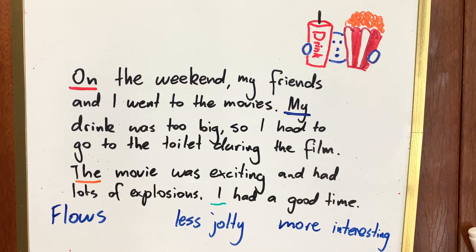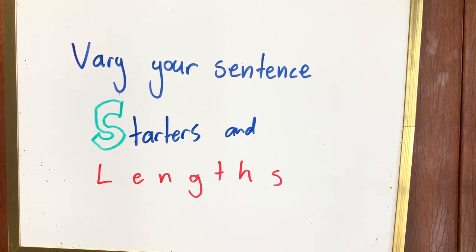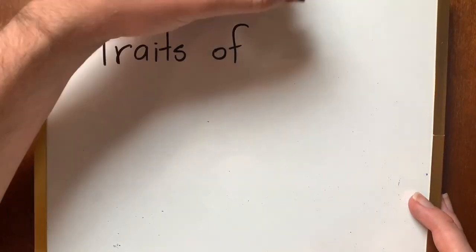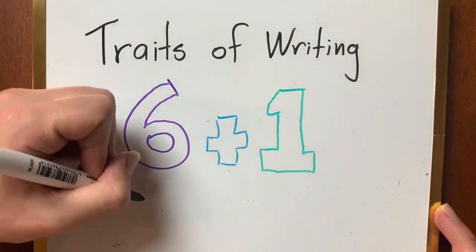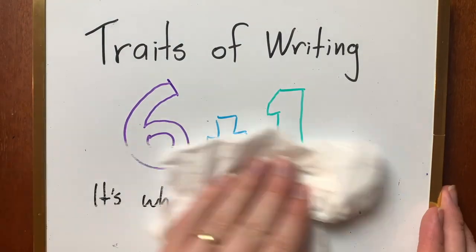It's now more interesting to read. Varying your sentence starters and lengths are easy ways to enhance the sentence fluency of your writing. Traits of writing, 6 plus 1 — it's what good writers do!